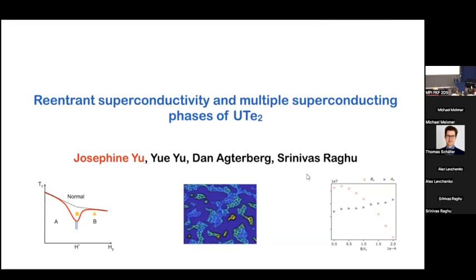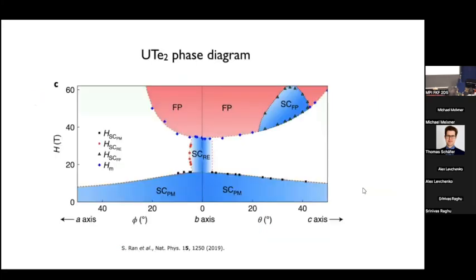My talk is on re-entrant superconductivity and multiple superconducting phases in uranium ditelluride. This is the experimentalist phase diagram of uranium ditelluride — it's a superconductor at low fields and ambient conditions, and it exhibits superconductivity at high fields up to 40 tesla.